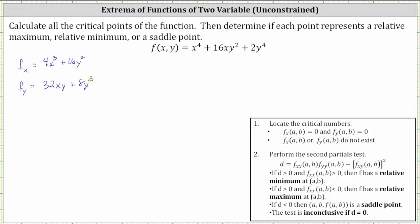Let's also find the second order partial derivatives needed for the second partials test. The second order partial with respect to x — differentiating the first order partial with respect to x again — gives us 12x squared. We also need the mixed partial: differentiating the partial with respect to x, now with respect to y. Differentiating 4x cubed plus 16y squared with respect to y, treating x as a constant, gives us 32y.